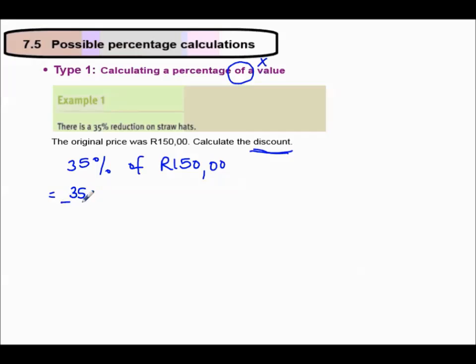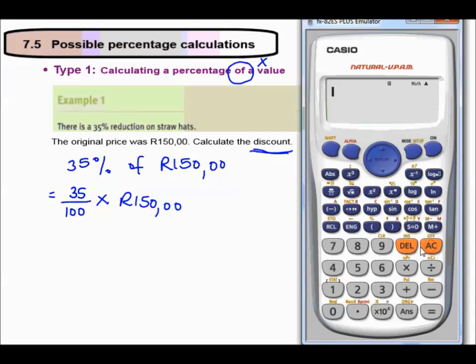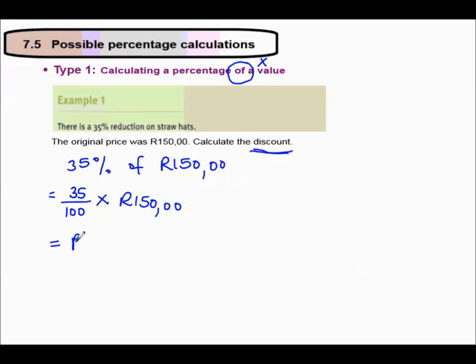35%, remember percentage means out of 100. So 35 out of 100, of means multiply, 150 rand. 35 out of 100 multiplied by 150, equals 52 rand 50. So this would equal 52 rand 50.